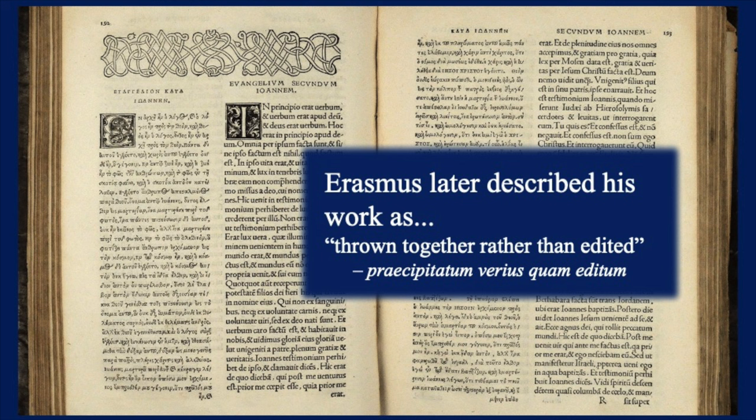When Erasmus back-translated from Latin into Greek, he actually introduced 17 variants that never existed in any manuscript up to that point in time. And the Trinitarian Bible Society, which continues to print his Greek text to this day, still prints those variants. He had very little to go on, frankly, but he did it because he knew others were preparing to print and he wanted to be first. He himself later said about his text, 'This thing was thrown together rather than edited.' It was the pressure of time and circumstances.